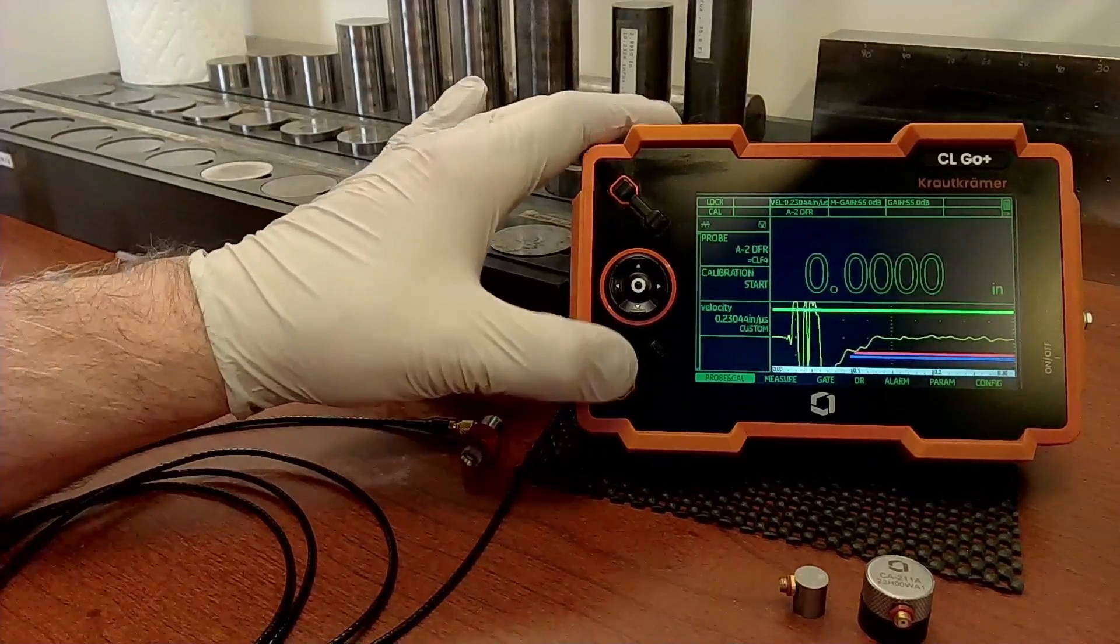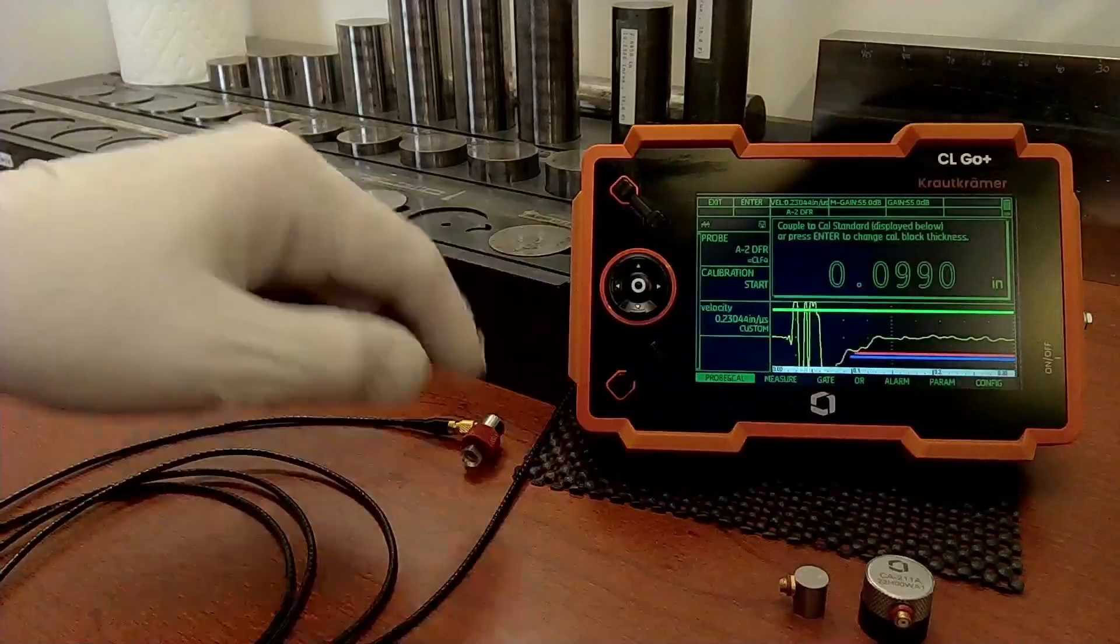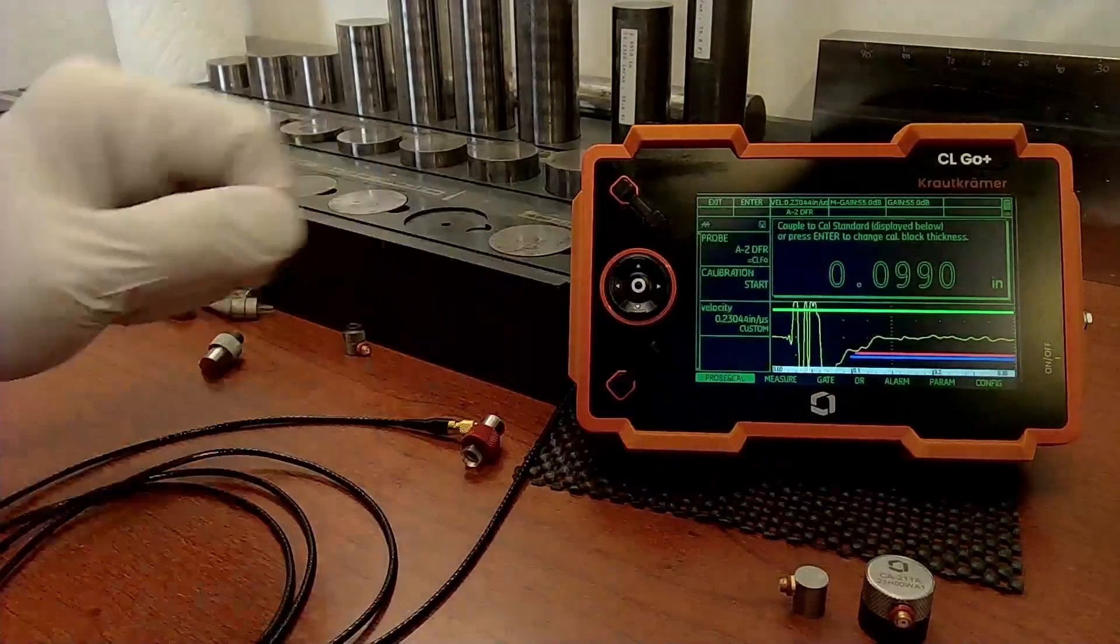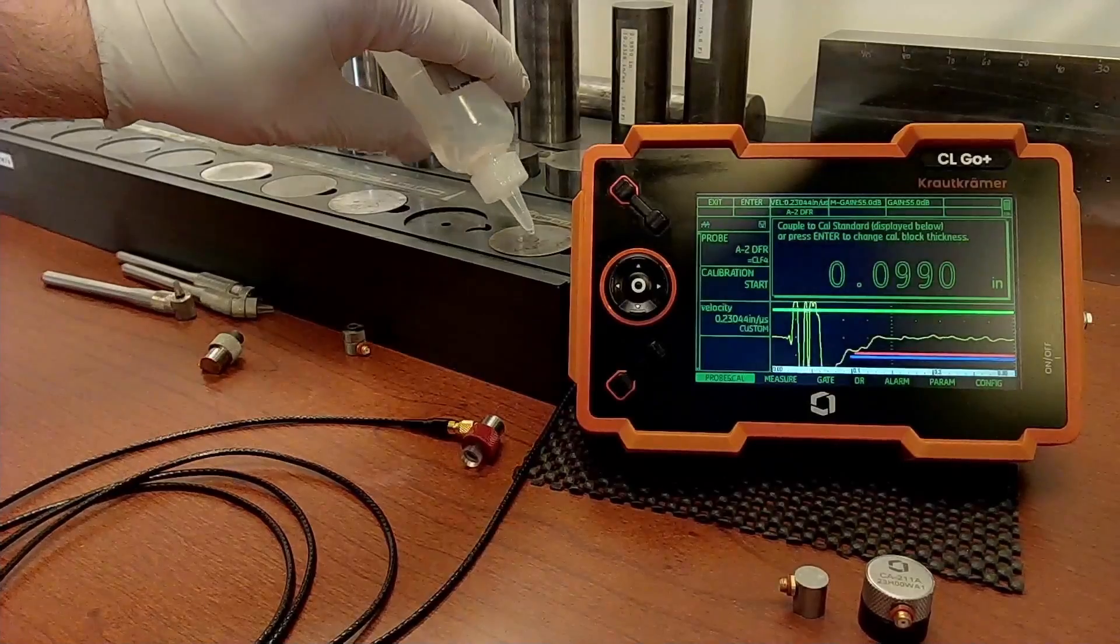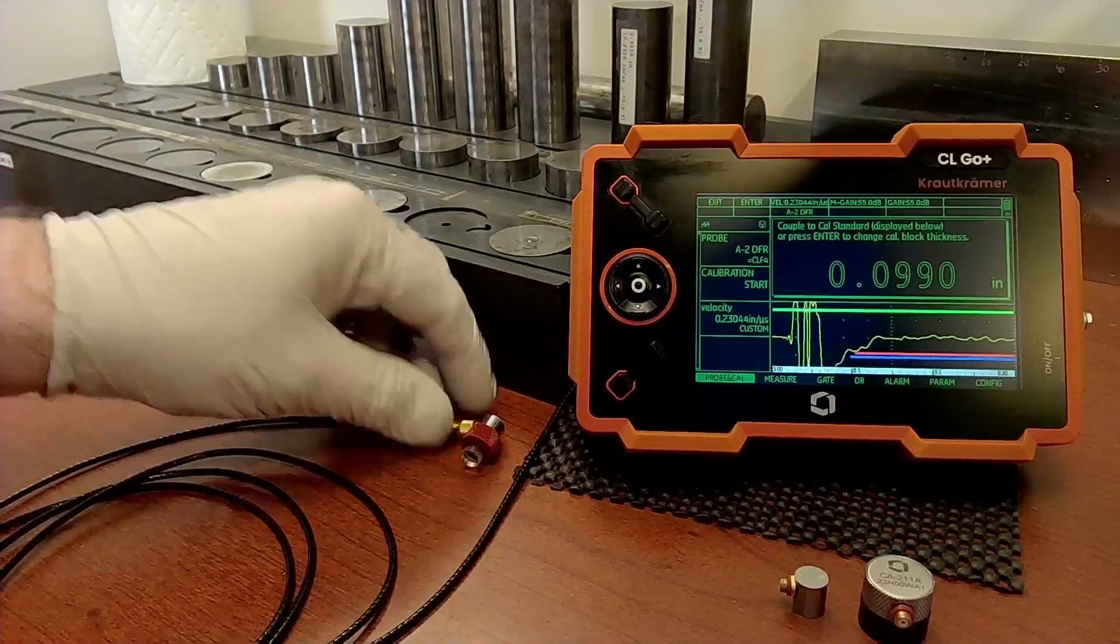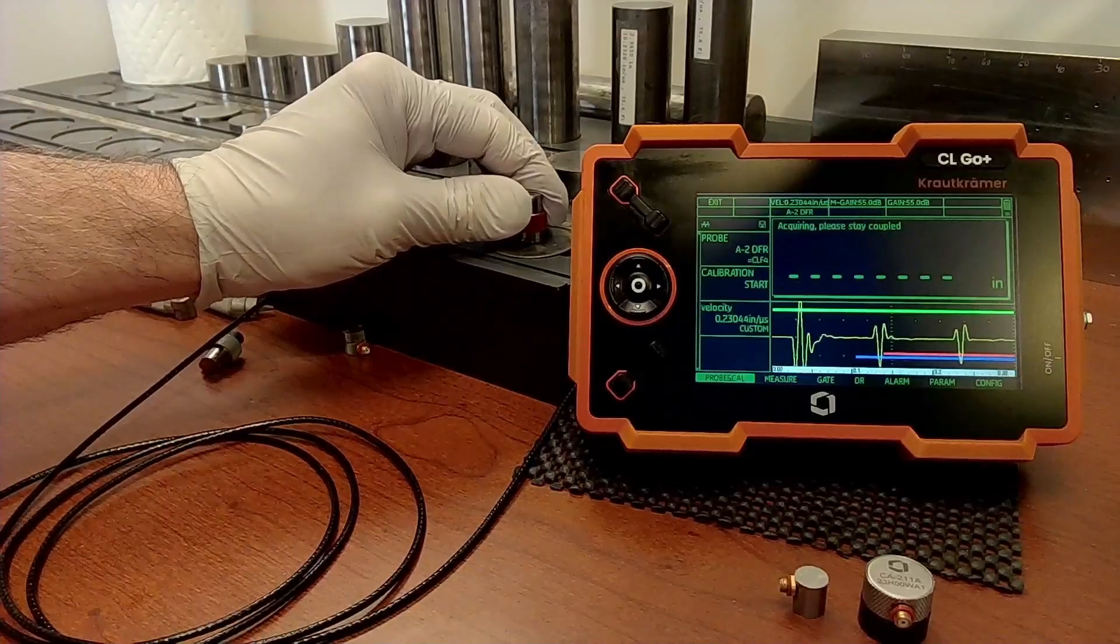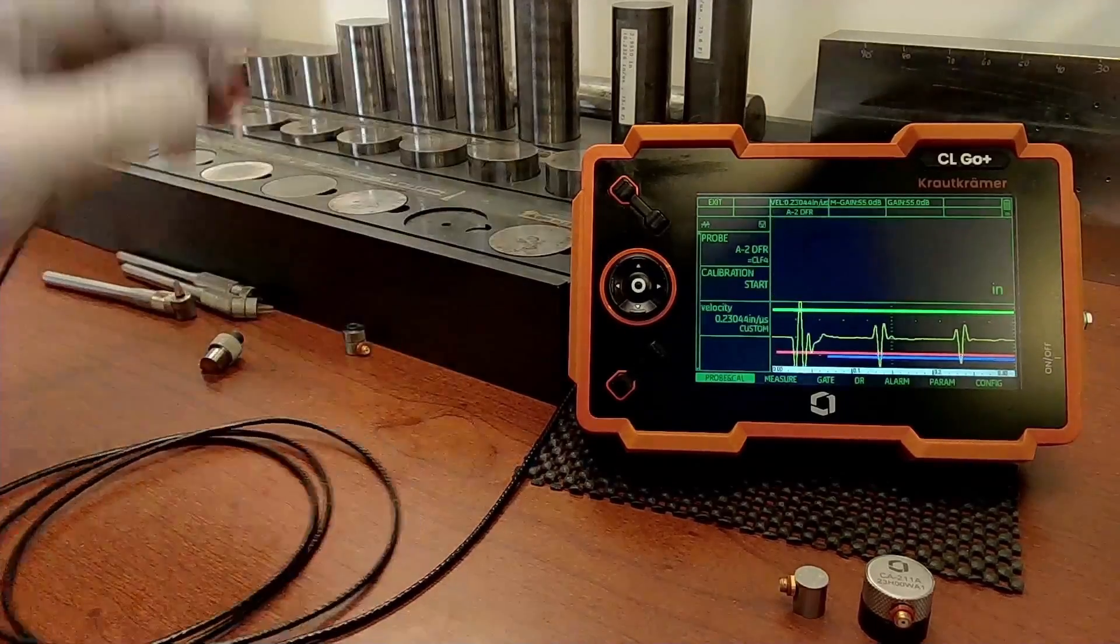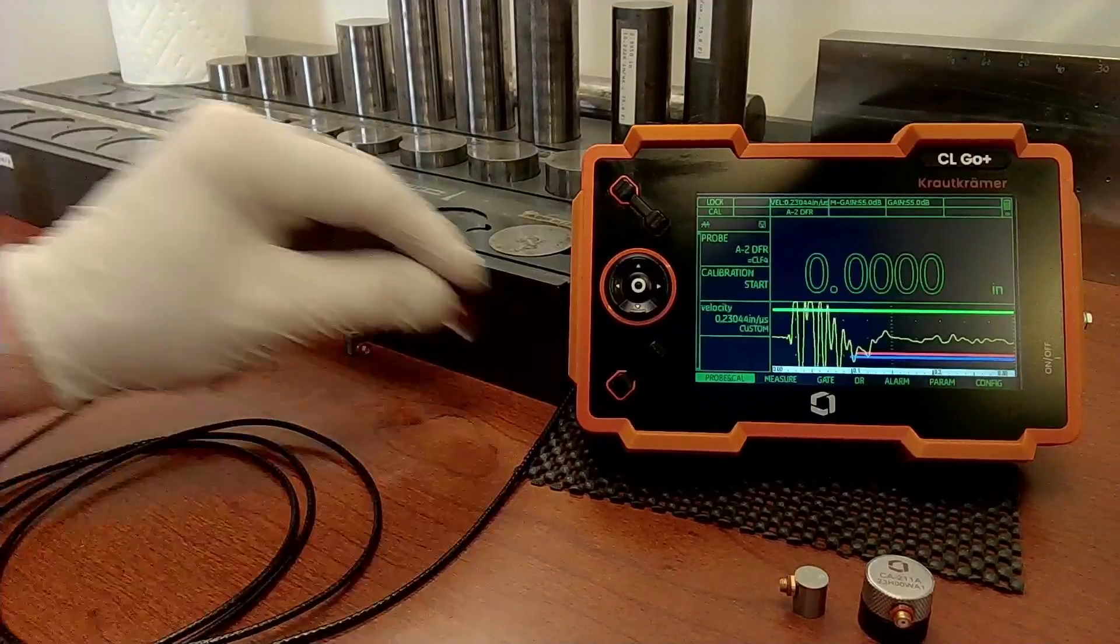We're powered up. I hit the calibrate button. Now I've previously told it that my calibration standard is 99 thousandths of an inch thick. Put a drop of couplant back here on the 99 thousandths block. Couple up. The instrument says go ahead and take the probe off.